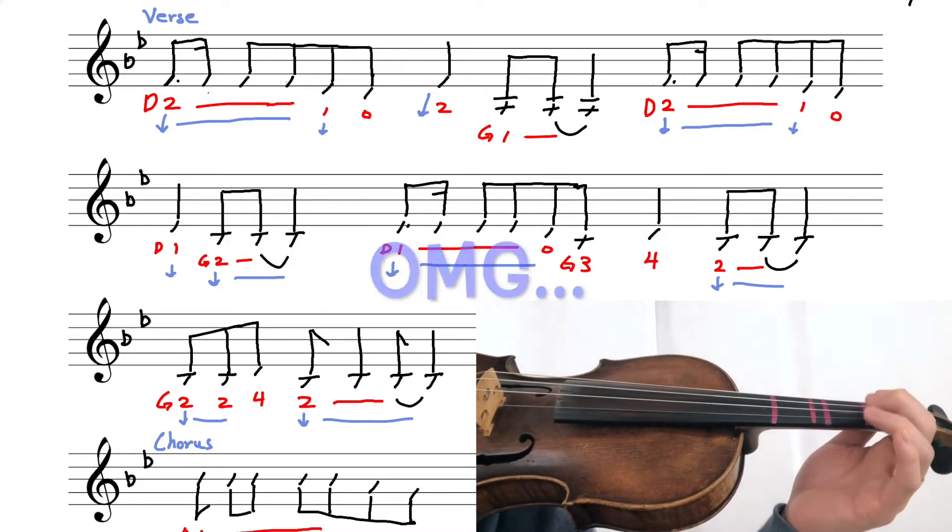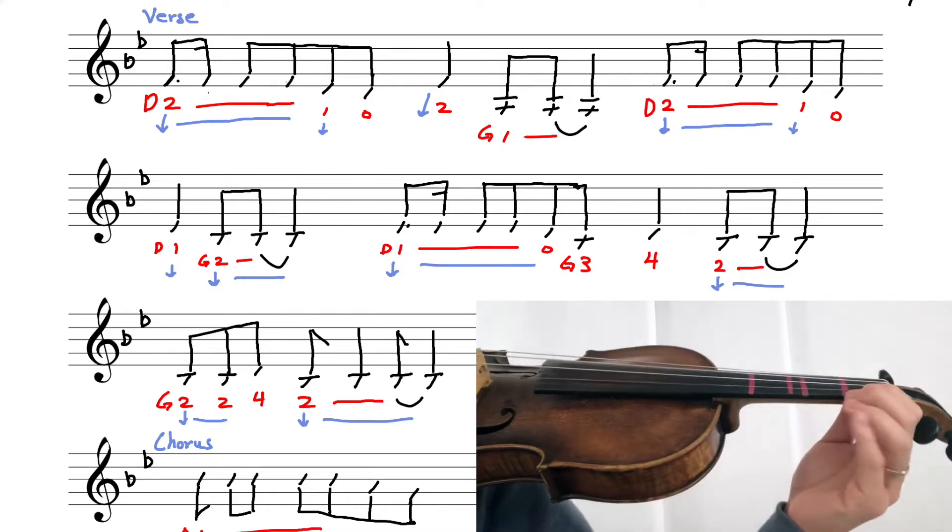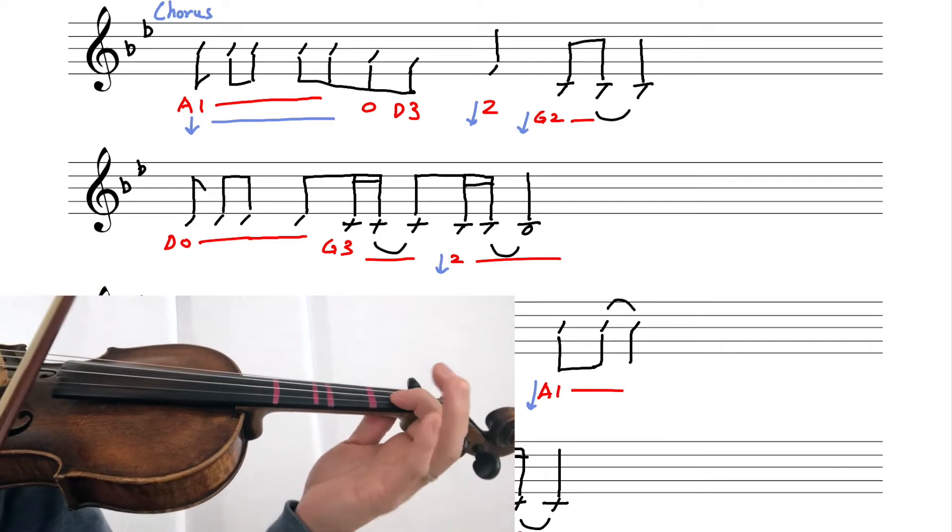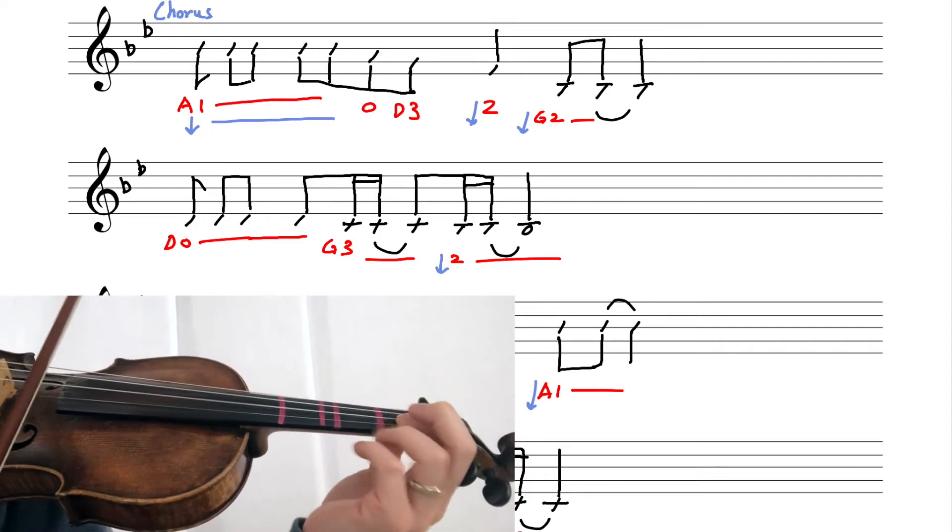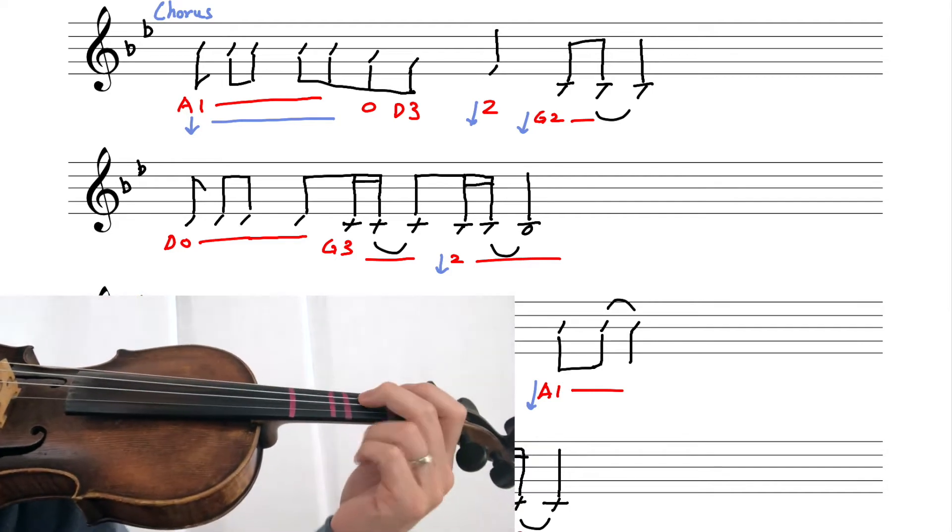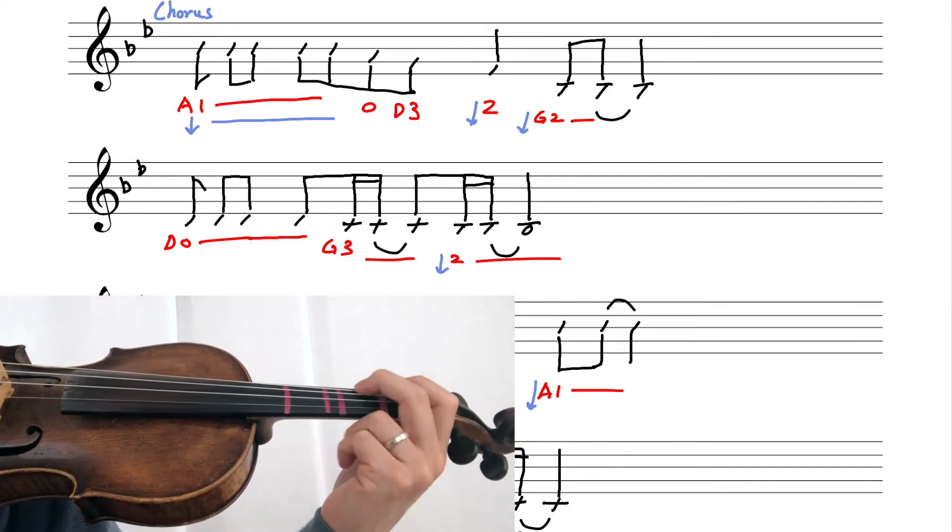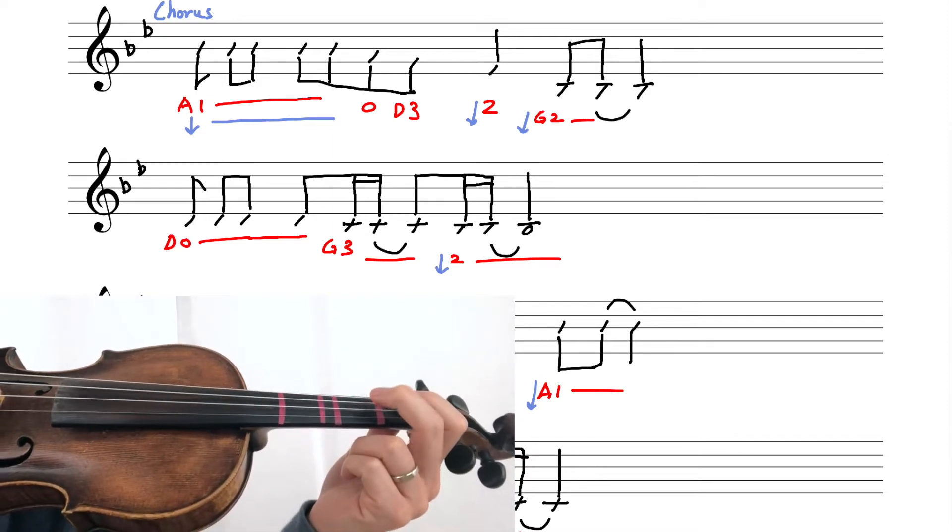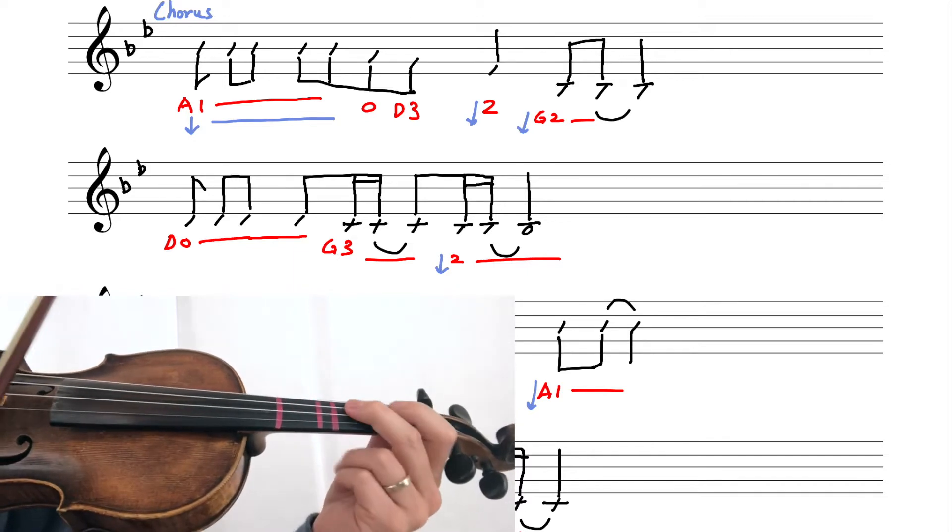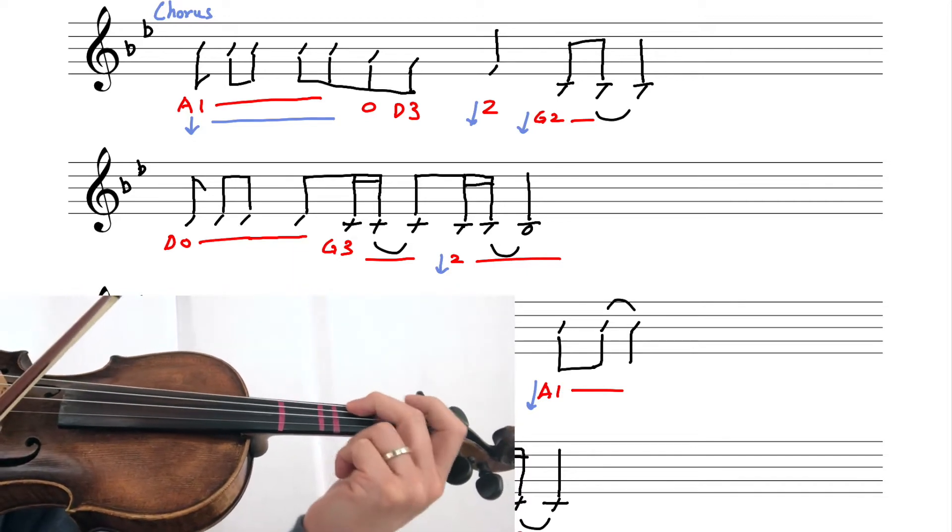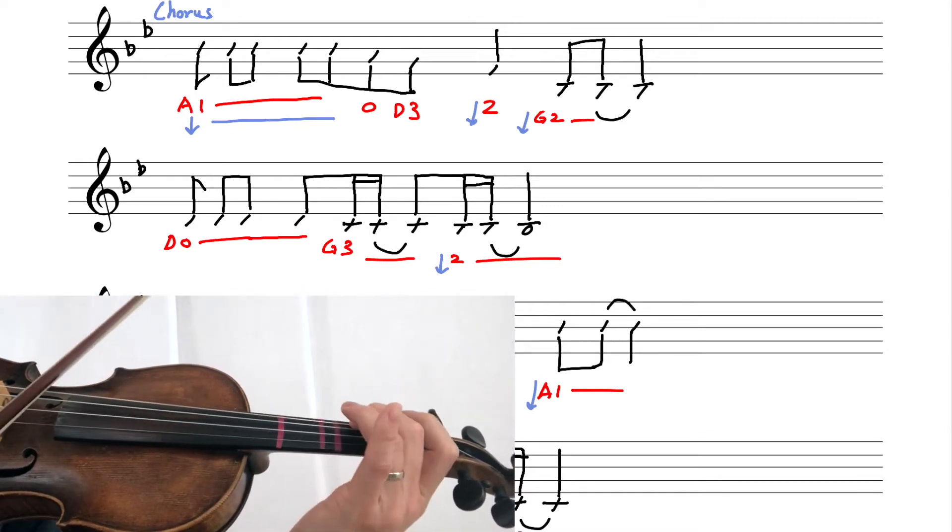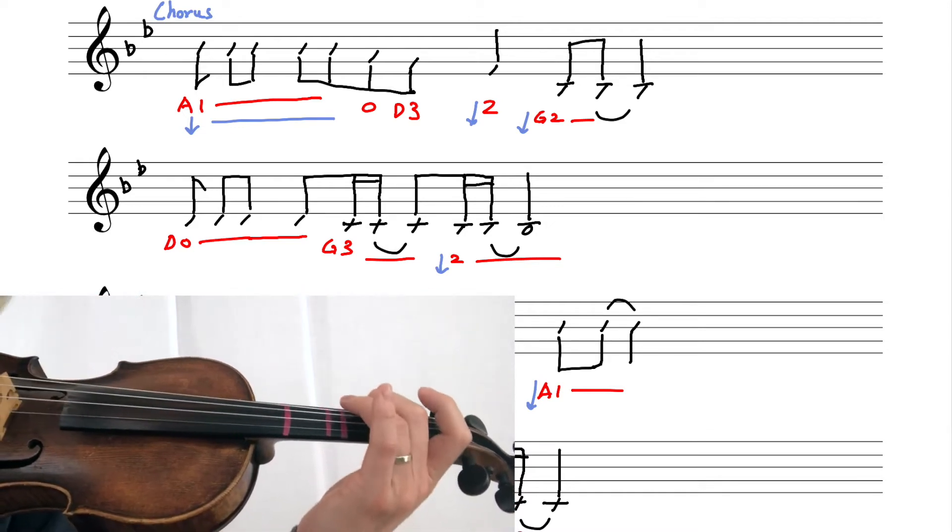Get it, and then you fade at the end. Alright, let's go to the chorus, it says there. When you do D2 to G2, make sure you kind of slide over. Don't do D2 and then lift your finger and then do the G2. Fade, okay.